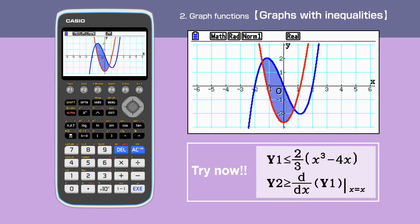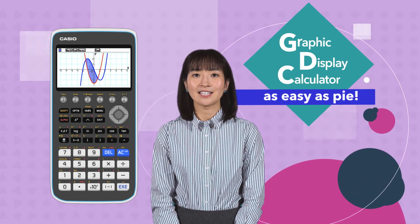Now we have the intersection area highlighted. In this video, we have shown how to use graph functions on a graphic display calculator, as easy as pi.